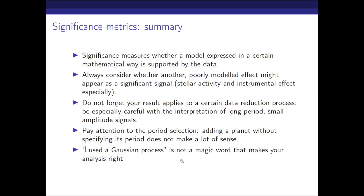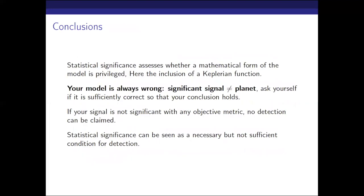From my experience reviewing papers: just saying 'I use a Gaussian process' does not magically make your analysis right. If you use a Gaussian process, be specific about it — describe it thoroughly and justify why you are using that particular form, because it's a tool that is tricky to use. In summary: this is the mathematical form of your model, and your model is always wrong — so a significant signal is not necessarily a planet. But if your signal is not significant with any objective metric, you cannot claim a detection. Statistical significance is definitely a necessary condition for detection, but it is not a sufficient one.